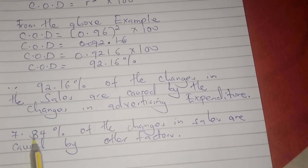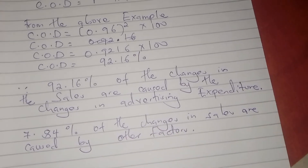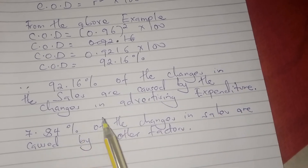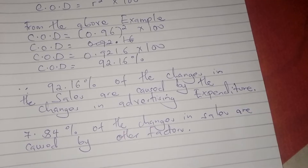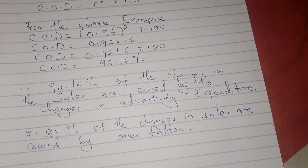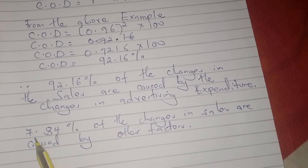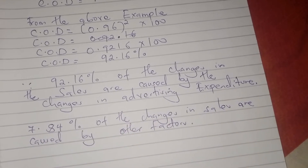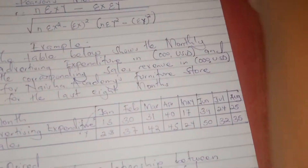The remaining amount is 100 minus 92.16, which is 7.84%. This means 7.84% of changes in sales are caused by other factors, because it's not only advertising that affects sales — other things like customer care, delivery, and the quality of products also matter. So 92% of changes in sales are caused by changes in advertising expenditure.